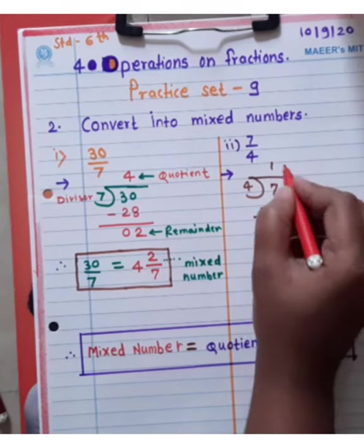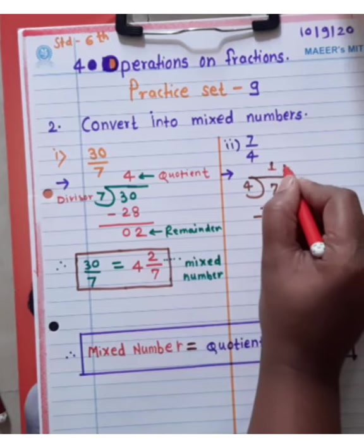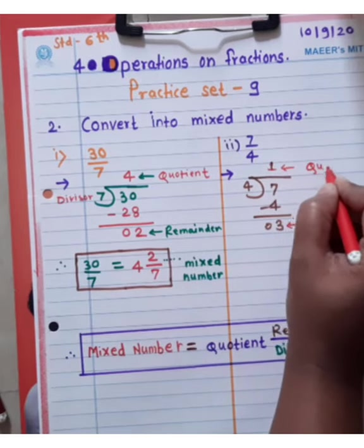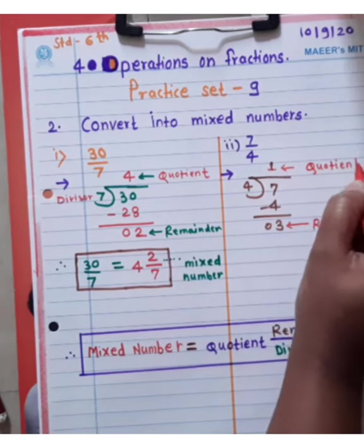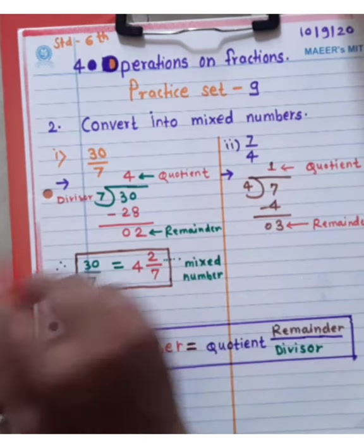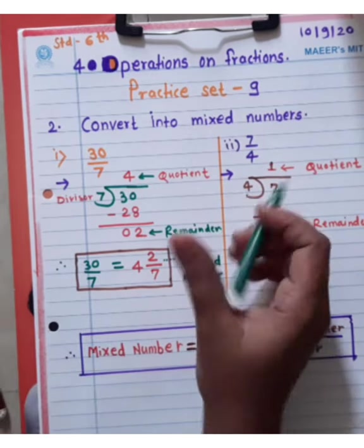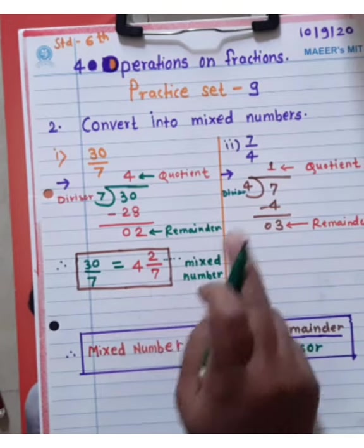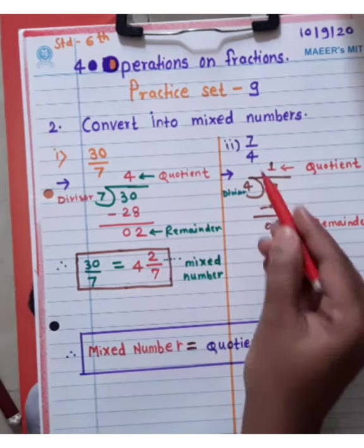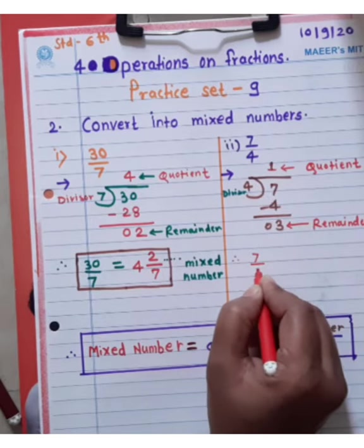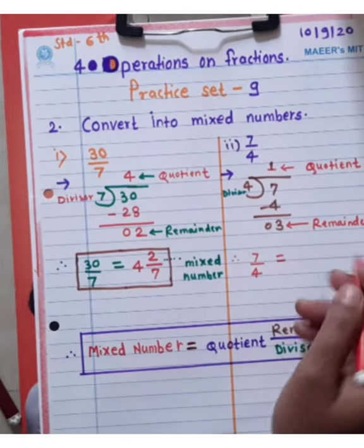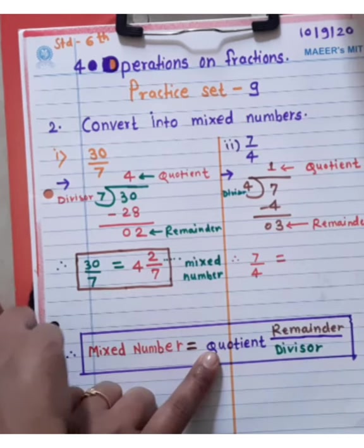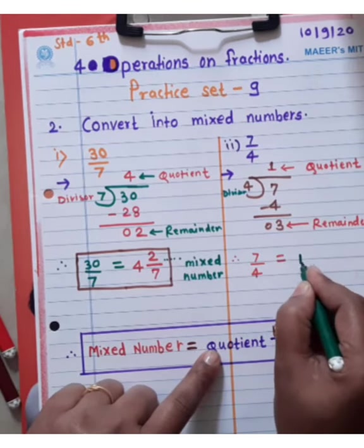This is the remainder, 3. 1 is the quotient. So 7 by 4 as a mixed number: first of all quotient, so write down here 1.